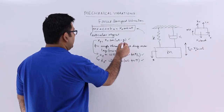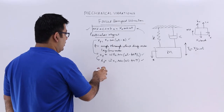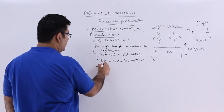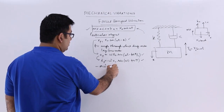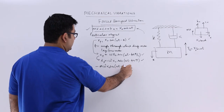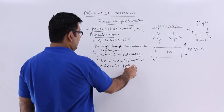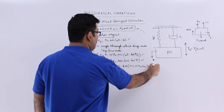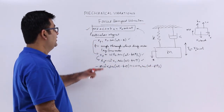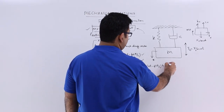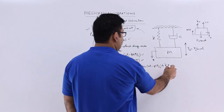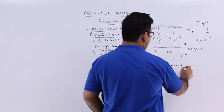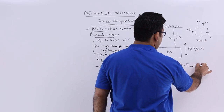Now we substitute these equations into the equation of motion. One small correction: the inertia term has a factor of minus omega squared. So you get: -m*omega^2 * x0 * sin(omega*t - phi) + c*omega * x0 * sin(omega*t - phi + pi/2) + k * x0 * sin(omega*t - phi) = F0 * sin(omega*t).